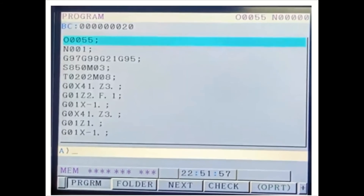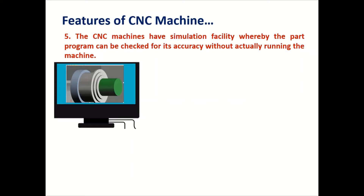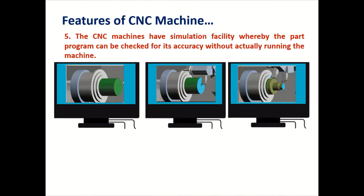The fifth feature of the CNC machine is that it has a simulation facility whereby the part program can be checked for its accuracy without actually running the machine. On the screen, you can observe the job on the computer without running the machine. For example, if you want to do a facing operation, you can check it on the computer itself, then go for taper turning operations and different operations — without running the machine, you can check your program and how the shape will be generated.